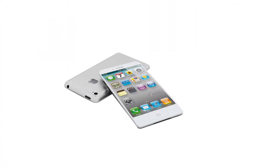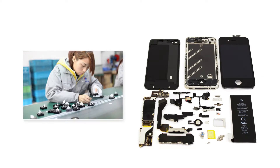Like all models in economics, production functions take a process that can be incredibly complicated — manufacturing an iPhone for example — and condense it into something simpler. An iPhone is made of hundreds of components sourced from dozens of companies and millions of employees around the world. Yet a production function might condense all this into just two inputs: labor and capital. Even with such dramatic simplification, production functions can be a powerful tool for understanding the behavior of firms in the real world.